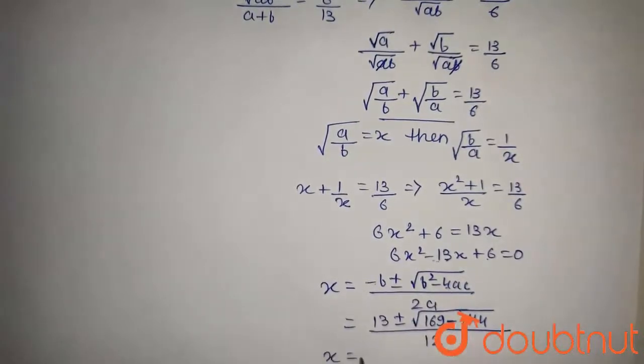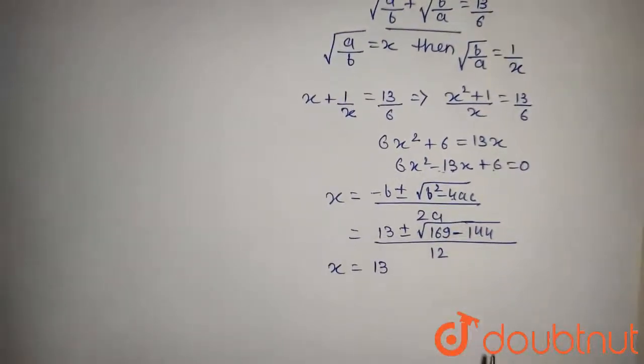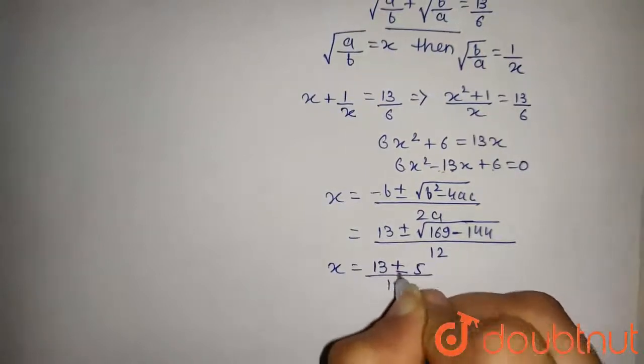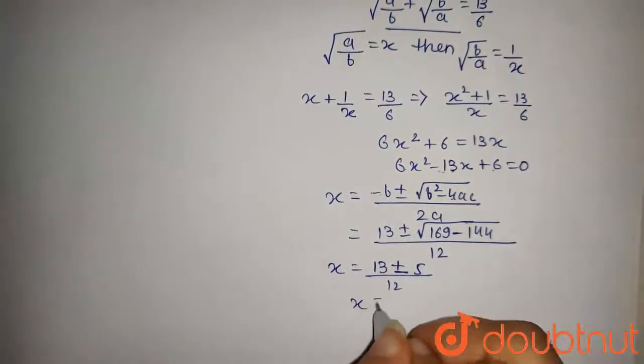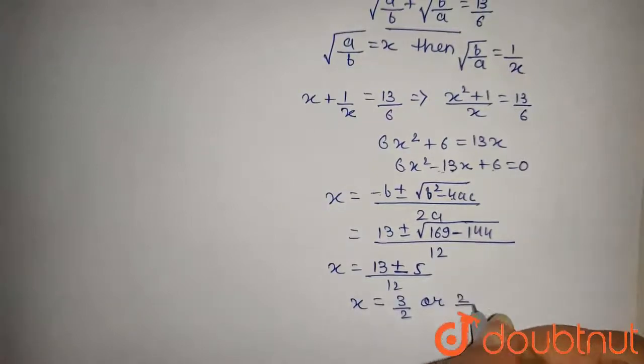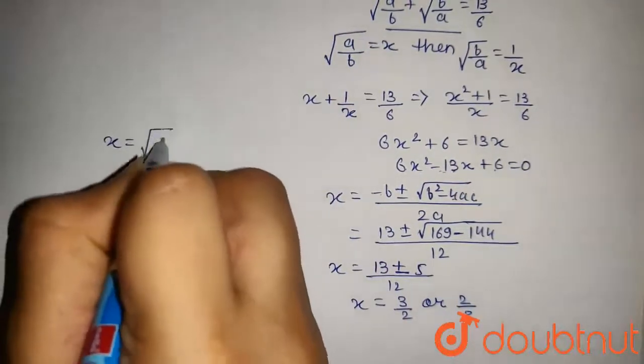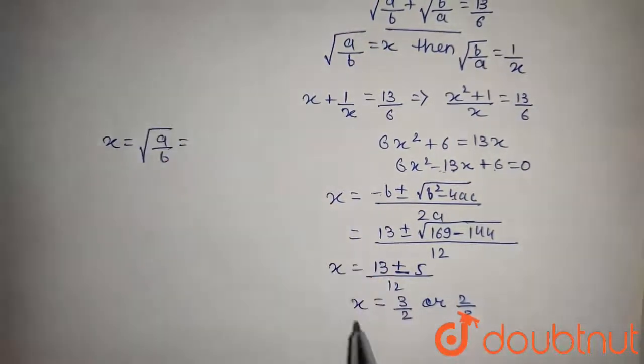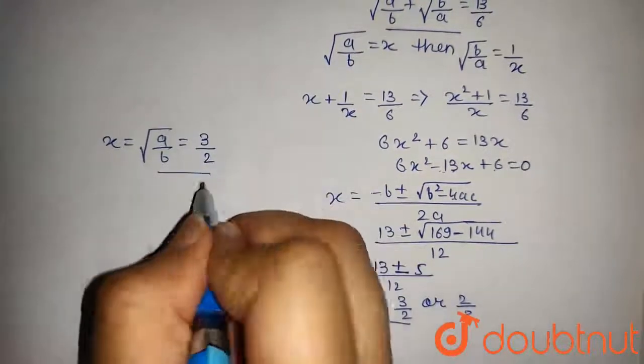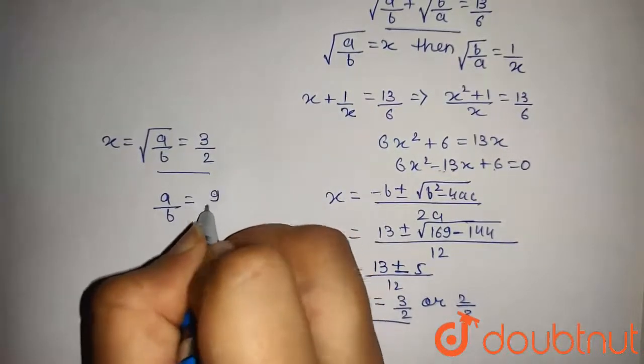From this we get X is equal to 13 plus minus 5 by 12. From this we get X is equal to 3 by 2 or X is equal to 2 by 3. X is equal to under root A by B and X from this is given by 3 by 2.